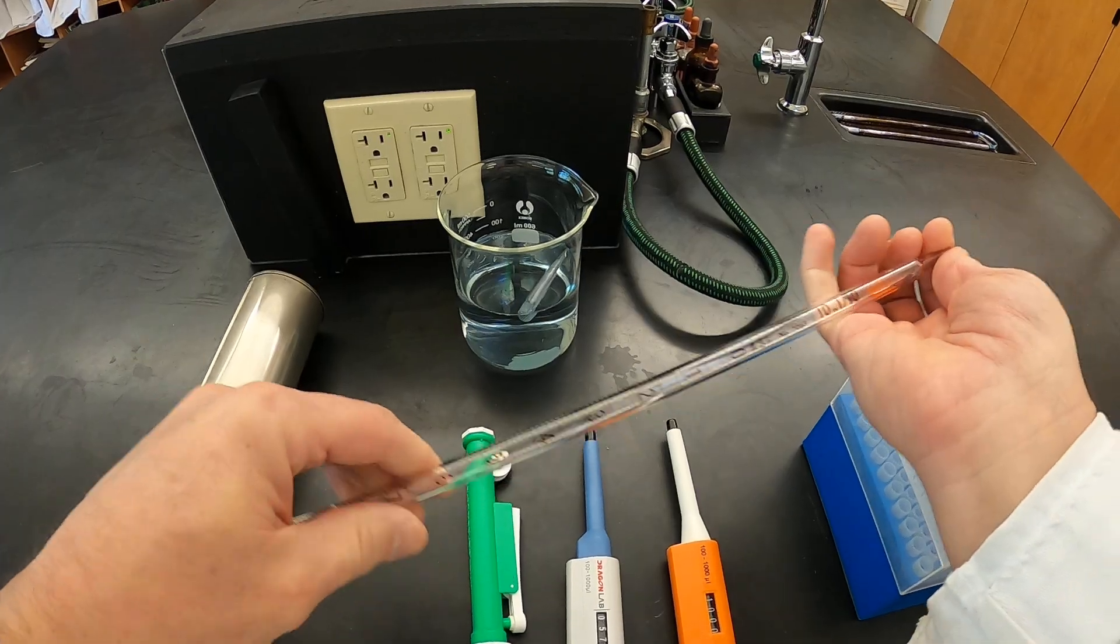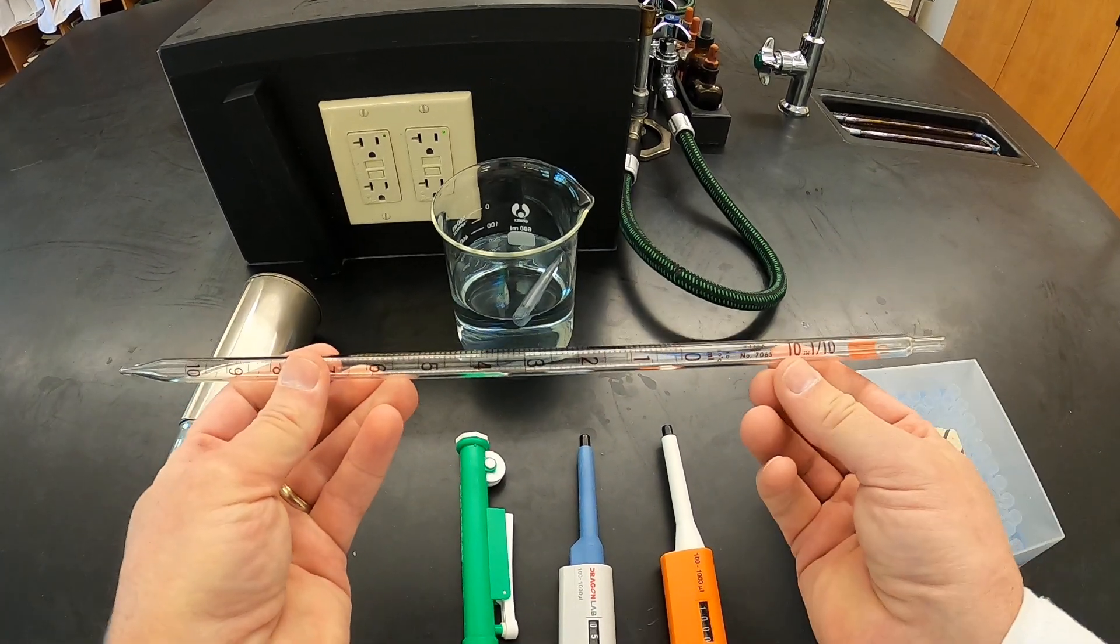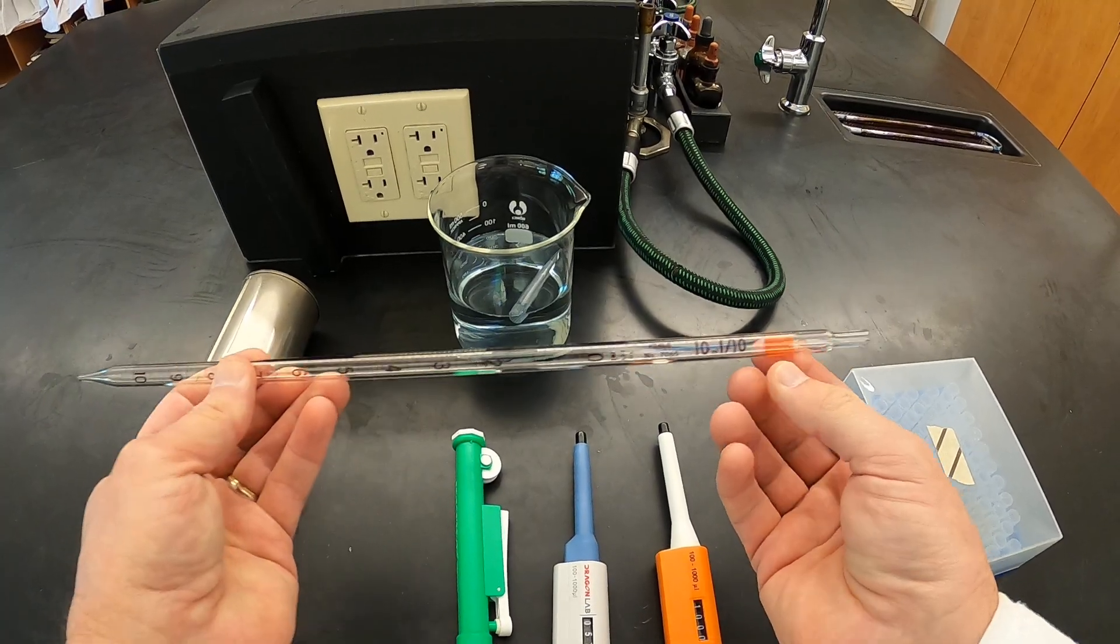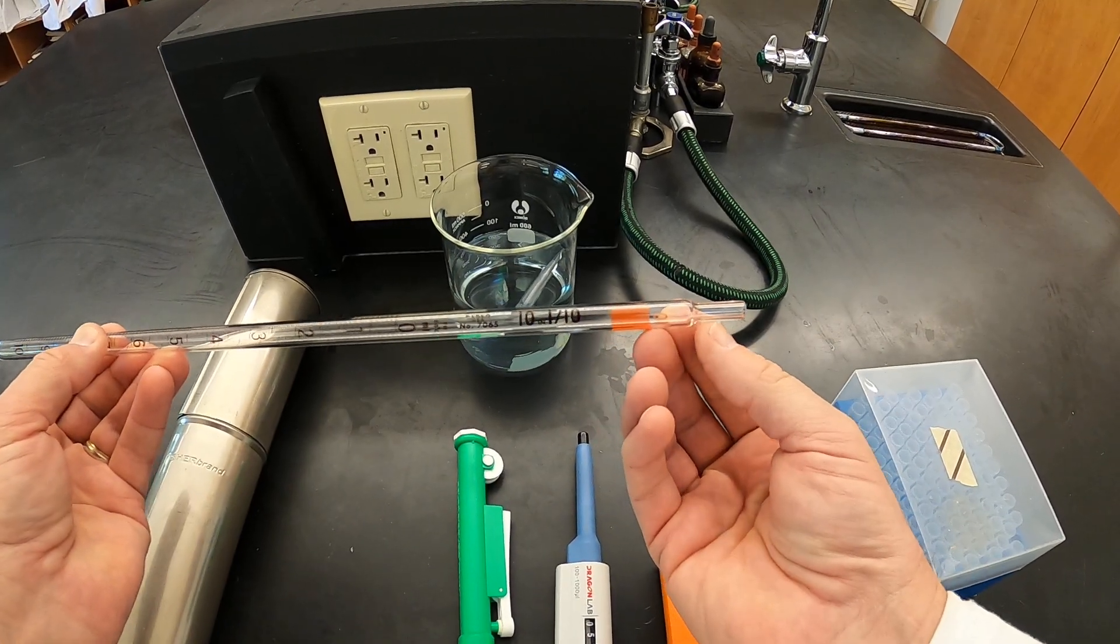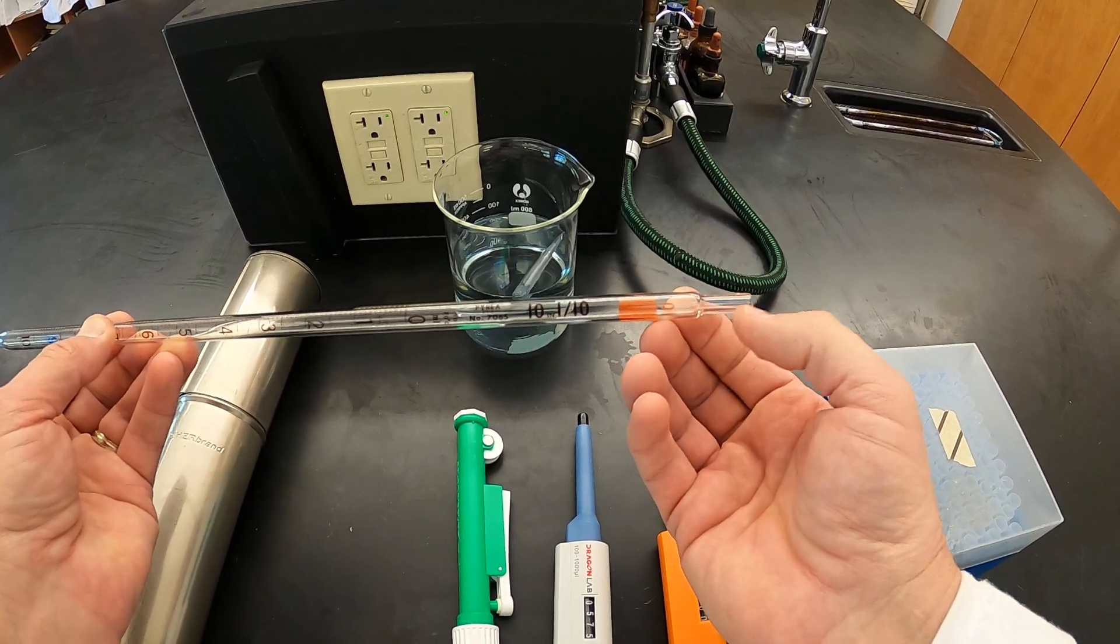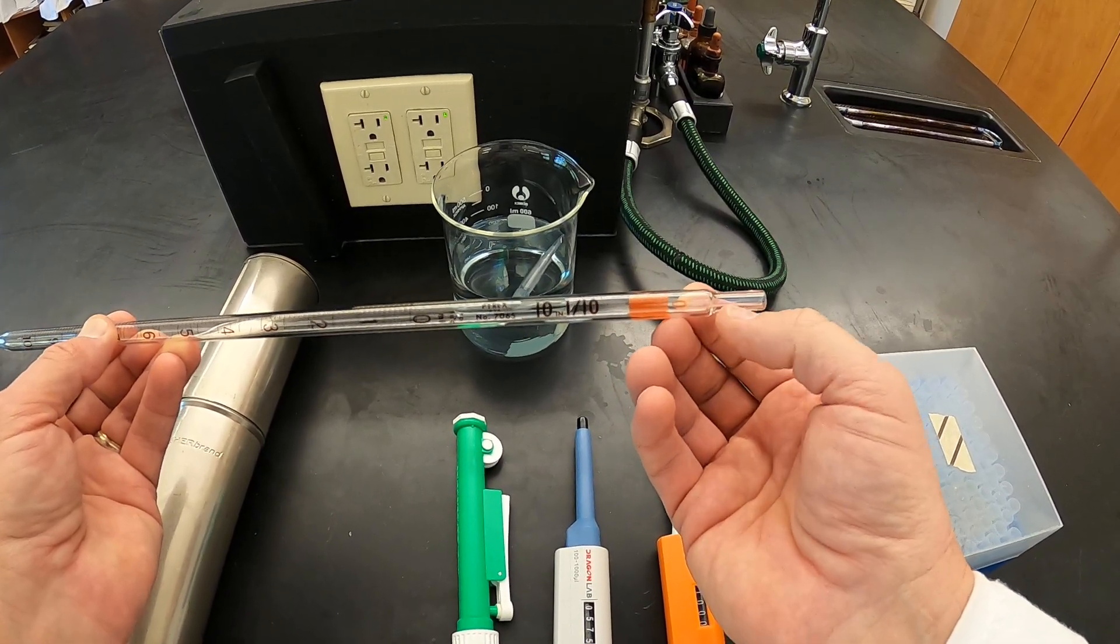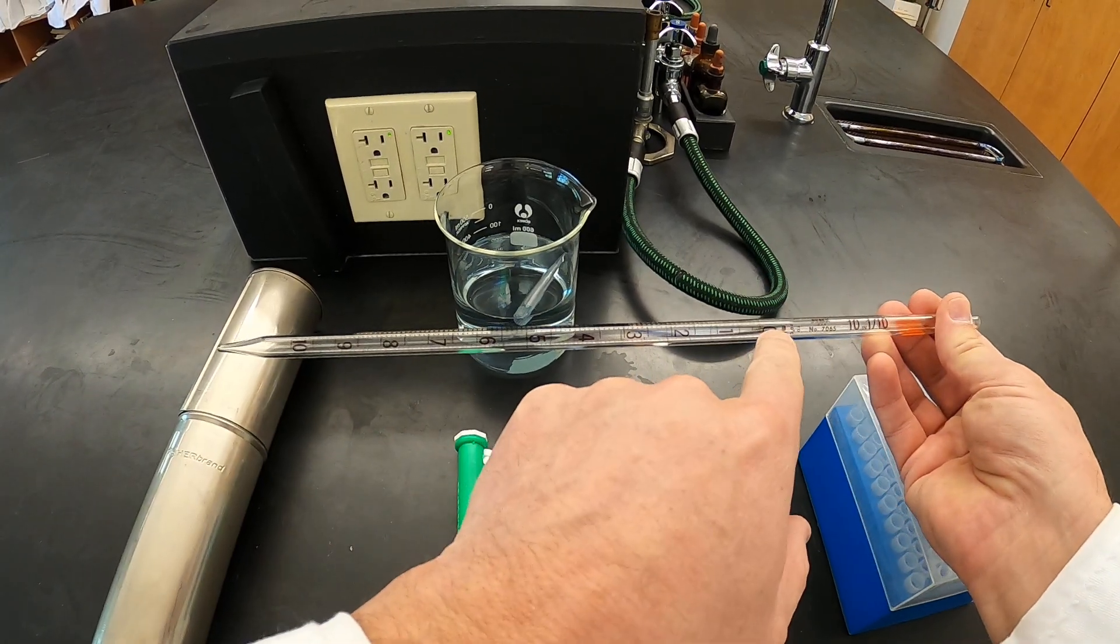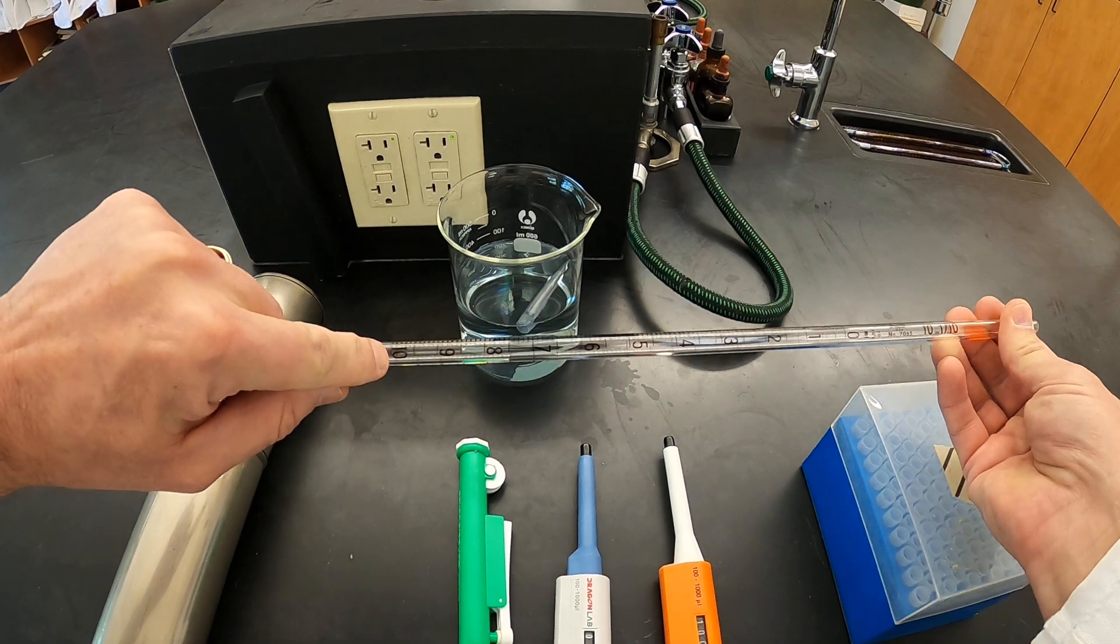And this pipette is also a 10 milliliter pipette, and it's accurate to one-tenth of a milliliter. Notice there's no etchings and no colored bands here at the top. This one also doesn't have a cotton plug. Sometimes they will and sometimes they won't. You'll notice here that it goes from zero to 10 milliliters there.